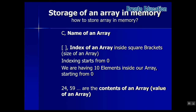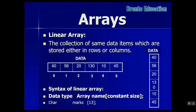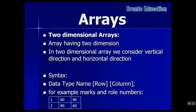The array has a name, an index, and a size in square brackets. Types of arrays include one-dimensional, also called linear array, and two-dimensional array. A linear array is a collection of same data items stored either in rows or columns. The syntax is: data type, array name, and constant size. For a two-dimensional array, which has both vertical and horizontal directions, you use data type, name, then row and column sizes, and two indexes for rows and columns.